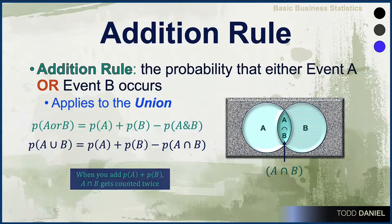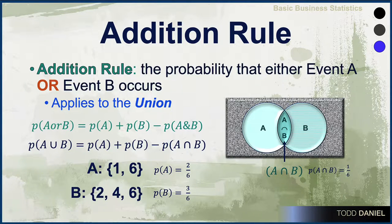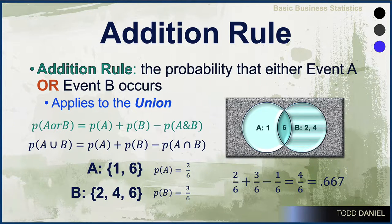For example, let's examine Event A — rolling a one or a six — two possible outcomes out of six. Event B is an even number, three possible outcomes out of six. A contains one and six; B contains two, four, and six. The intersection of A and B contains six — that is the piece being counted twice. So we must subtract the one-sixth from the addition of the two previous probabilities.